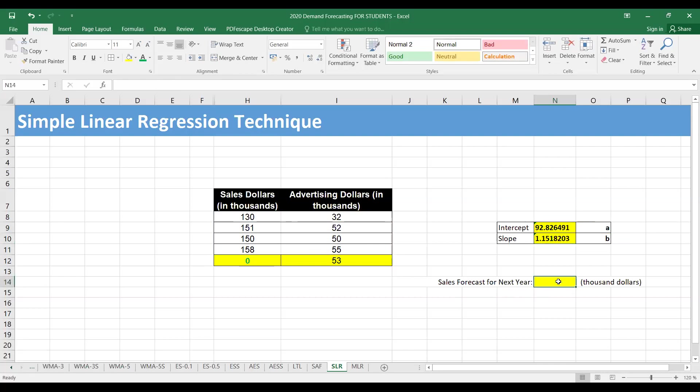Sales forecast for next year will be equal to a plus bx, value of a plus value of b into x. So x in this case is the amount that you are planning to invest on advertising, $53,000. The sales that you can expect the next year are around $154,000. This is one way to approach this problem.